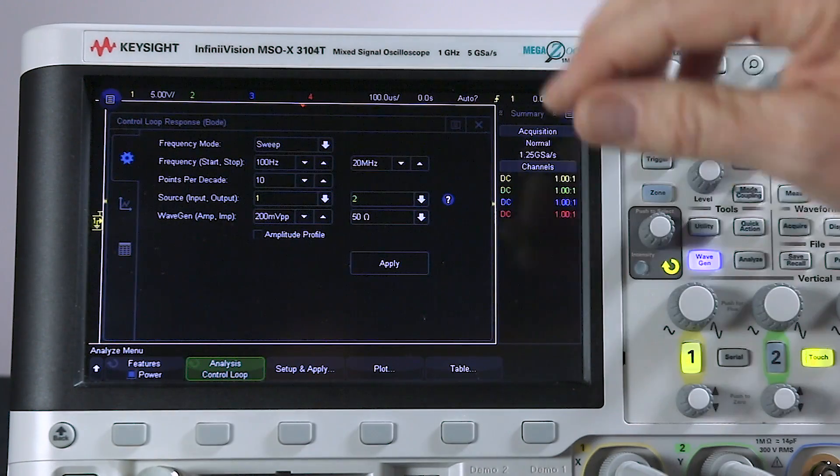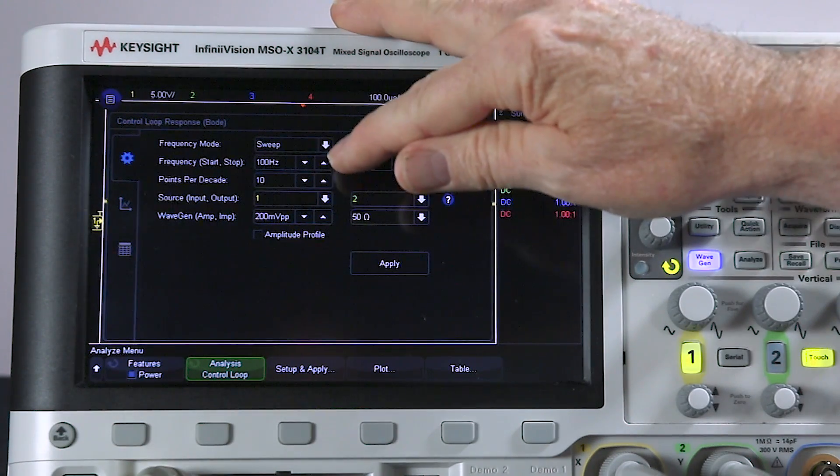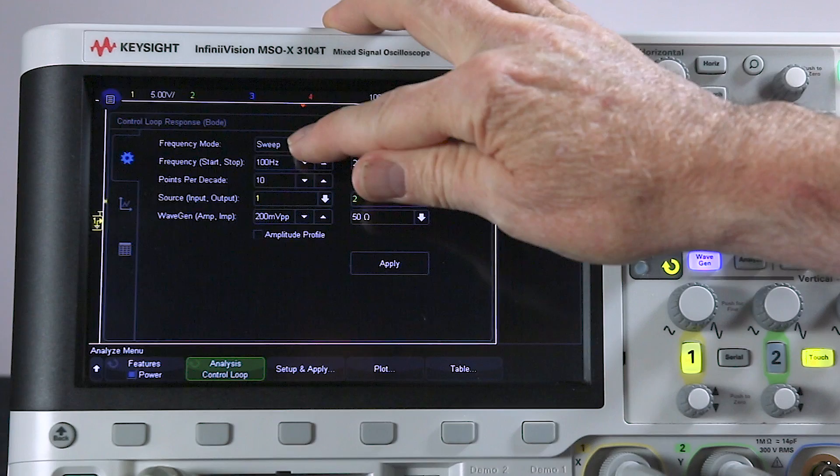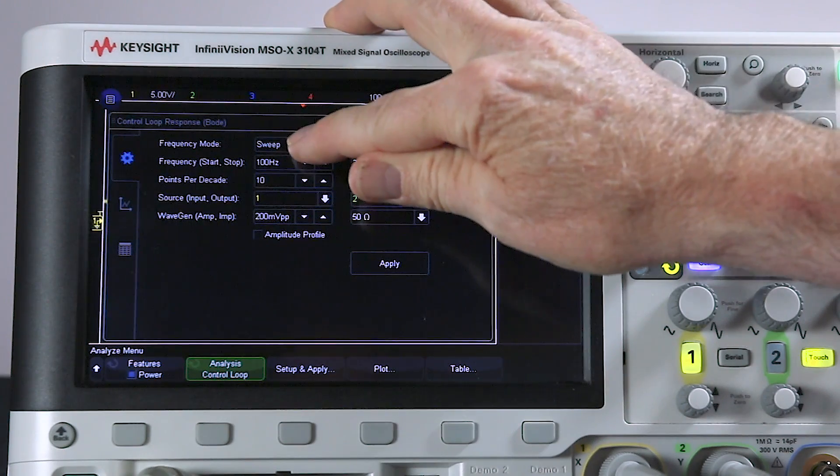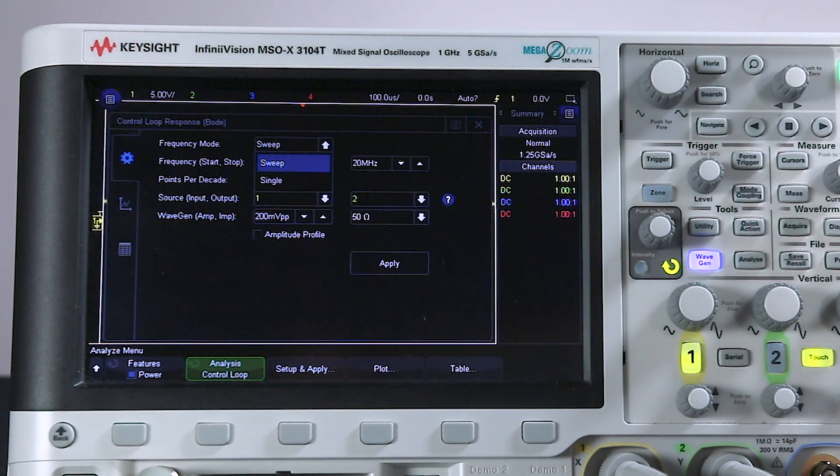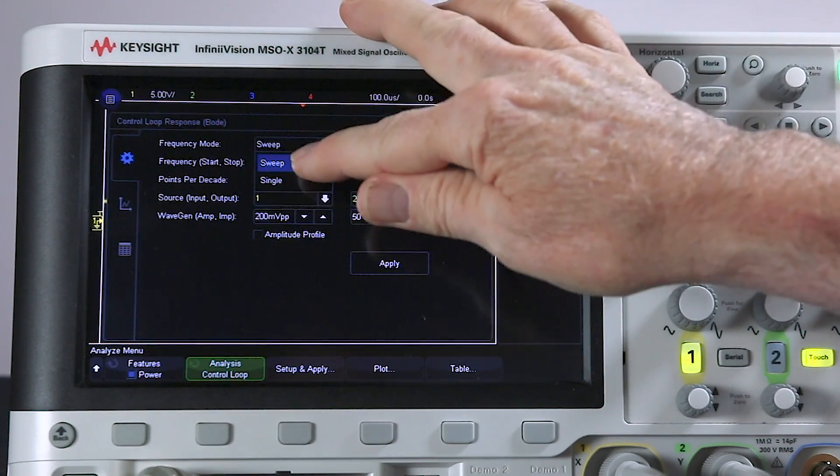Let's go back and set everything up. See what our options are. There are two basic modes. Sweep mode, which is the normal mode that you would use for performing this type of measurement. I'll show single later.